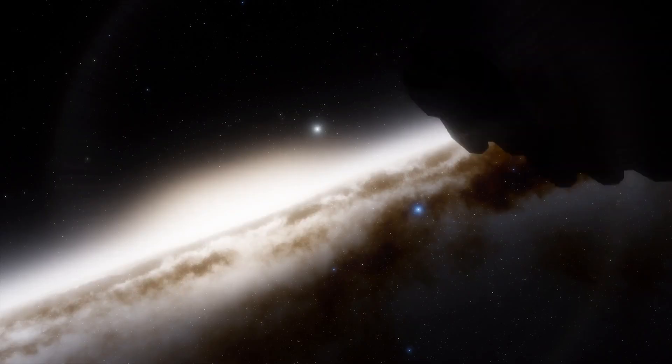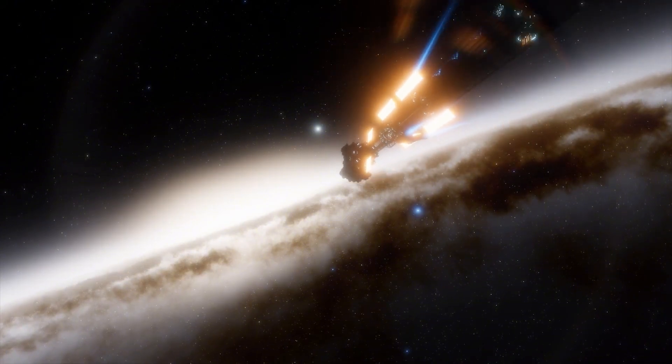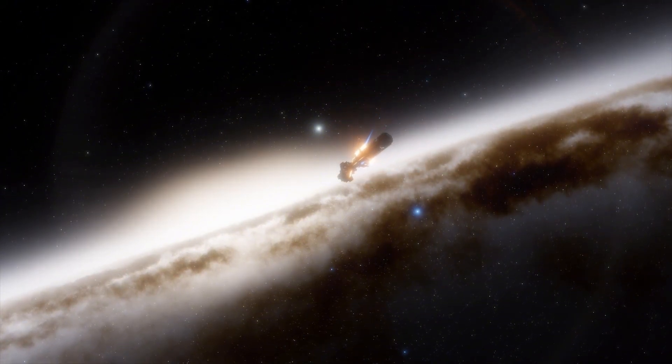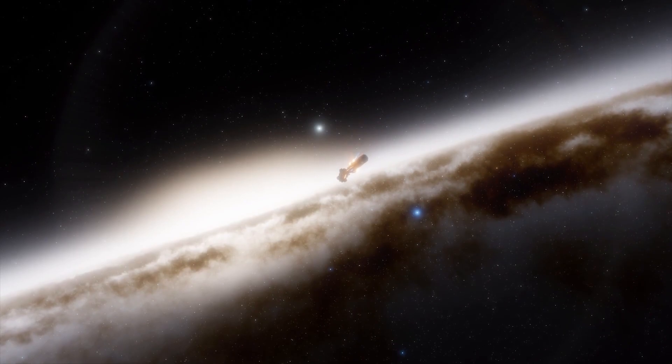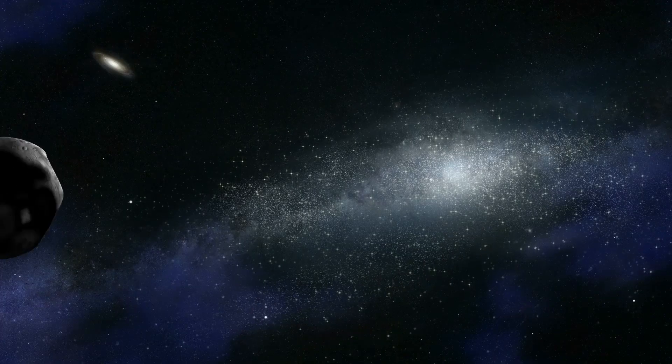The Sun has a radius that is around 764 times smaller than Betelgeuse. If this star replaced our Sun in the solar system, it would reach past the asteroid belt and even beyond Jupiter, suggesting that Earth, Mars, Venus, and Mercury would all be completely absorbed.